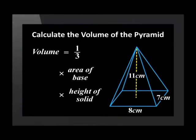The length of the rectangle is equal to 8 cm and the breadth is 7 cm. The height is 11 cm. Calculate the volume of the pyramid.